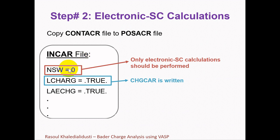NSW=0 means only electronic self-consistent calculations should be performed and we don't need to change the geometry. LCHARG determines whether the charge densities such as the CHGCAR and CHG files are written or not. We will turn this tag on to get the CHGCAR and CHG files.